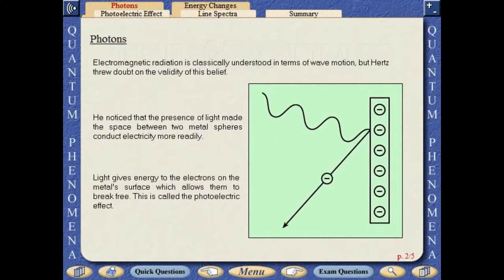Electromagnetic radiation is classically understood in terms of wave motion, but Hertz threw doubt on the validity of this belief. He noticed that the presence of light made the space between two metal spheres conduct electricity more readily.